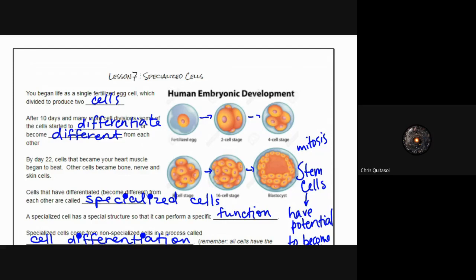By day 22, cells can become bone, nerve, skin cells, and all the different things start to come into alignment.